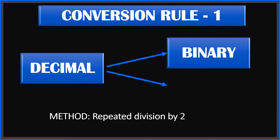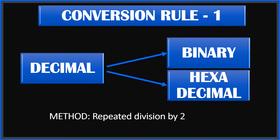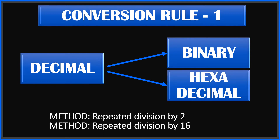Similarly, if you are going from decimal to the hexadecimal number system, you will use the same method, but now you will repeatedly divide by 16. So if you are going to binary, divide by 2; if you are going to hexa, divide by 16.